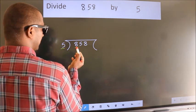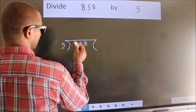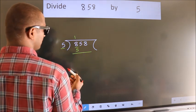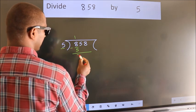A number close to 8 in 5 table is 5 once 5. Now we should subtract. We get 3.